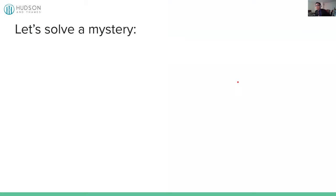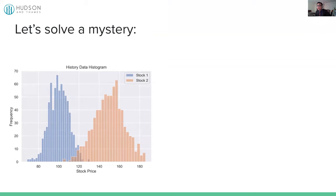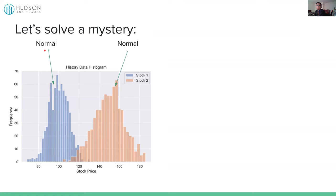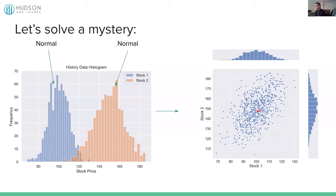Let's try to solve a mystery. Say you are a quant trader and you see two stocks' historical data. They look like a bell shape and are symmetric. You did some statistical tests and they showed that they are normal. Because you want to do pairs trading based on them, a natural question is: what's the joint distribution? A natural assumption is that since one is normal and another is normal, the joint is a bivariate normal. But the answer is no.